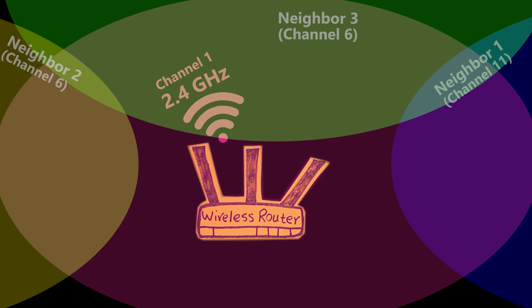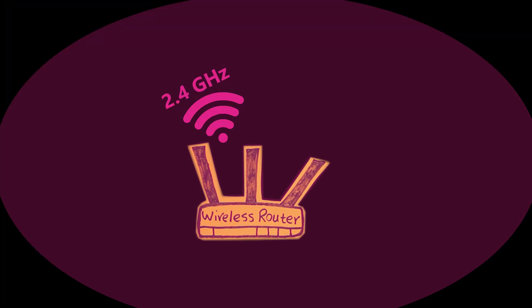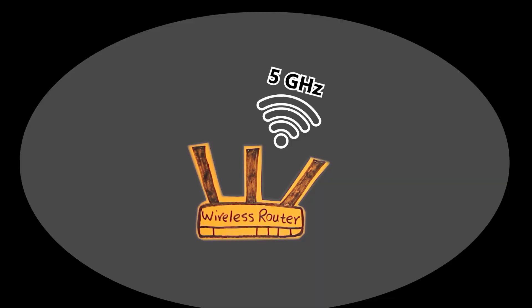Knowing all this, I can periodically do a site survey and change the channel manually myself if necessary, or schedule the router to reboot itself every day. The same concept applies to the 5 GHz wireless network as well — it just has more available channels, including more non-overlapping ones, which is good. Number four: I make sure I know about wireless channels, and if I use auto-select, I should know the router may keep the same channel for a long time until certain conditions are met, so I might want to reboot it periodically or manually choose a channel.